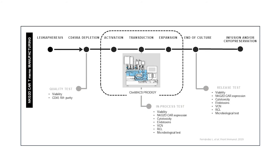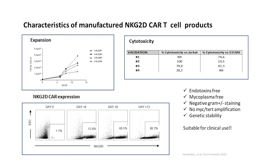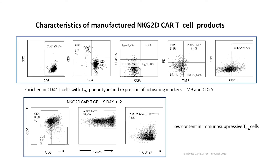We decided to move to the CliniMACS Prodigy system to produce these CAR T cells, and we were successful. We did not encounter the fratricide problems that other groups had. We were able to demonstrate to our regulatory agency that T cell expansion was satisfactory. We achieved 80% transduction efficiency at two weeks, passing all microbiological tests and confirming genetic stability, and they finally allowed us to infuse these cells.